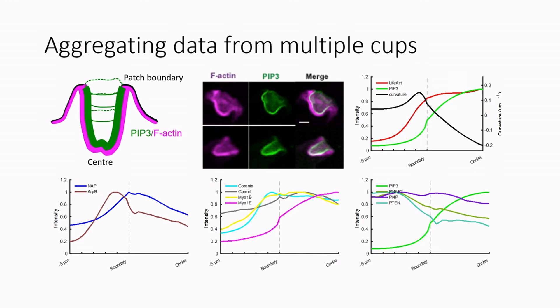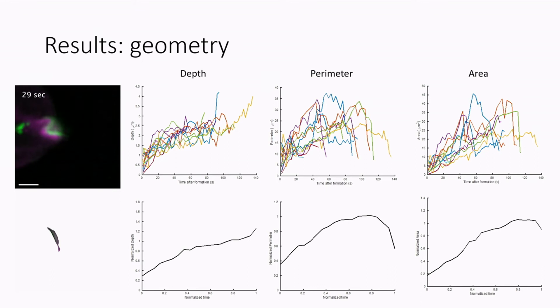So this gives us an idea of where the polymerization is happening. We can also look at the geometry of the surfaces, of the patches. And so if we look at depth and perimeter, it's kind of difficult if you want to look at the lifetime because these things, they have different time spans. You know, some will rapidly form and then close.